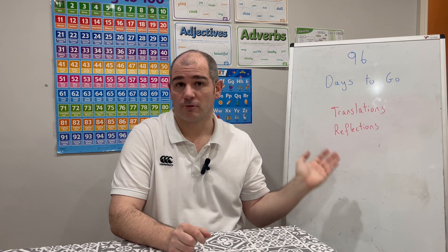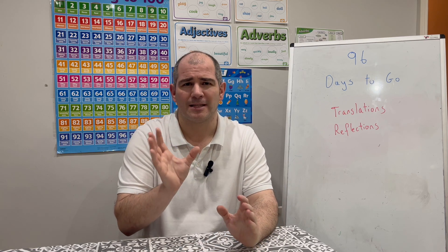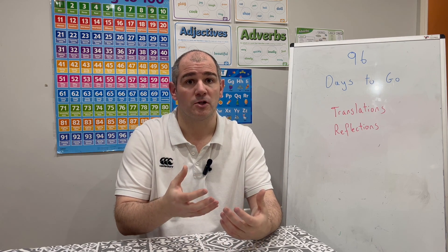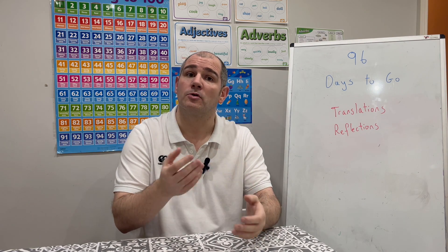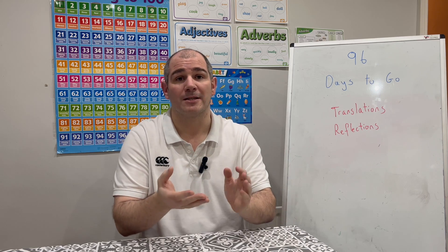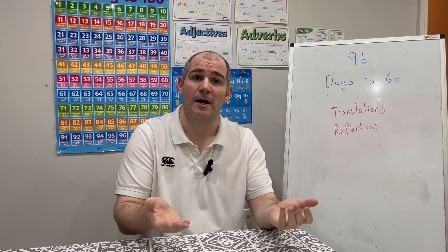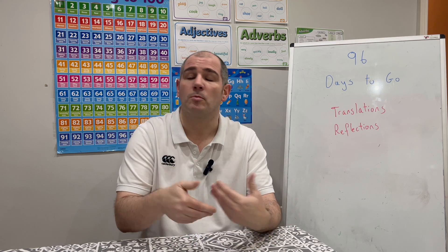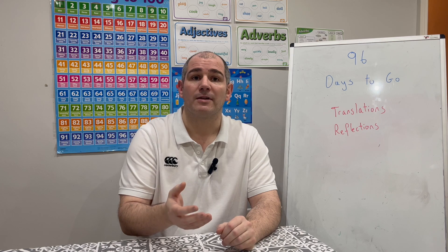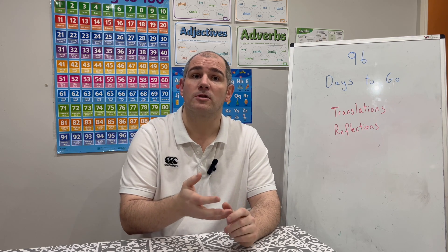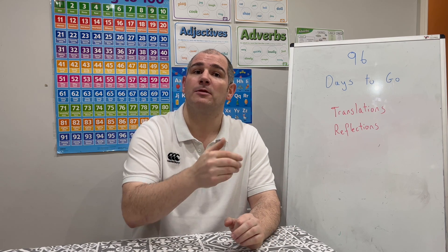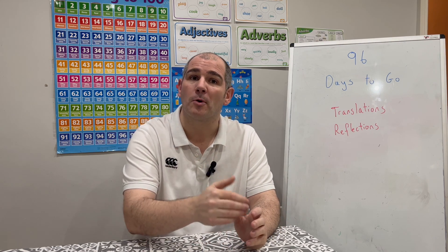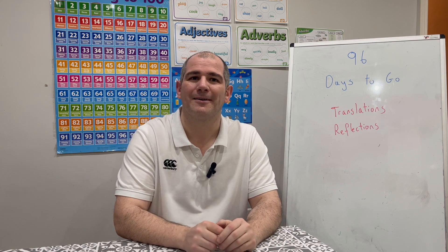Today's topics have been translations and reflections. Remember what translation vectors mean, how to reflect shapes in y = x and y = -x, and how to describe those transformations fully — stating whether it's a translation or reflection, giving the vector or mirror line equation. There's a link to practice questions in the description — the more practice you do the better. Keep doing your revision cards and if you're aiming for grade 8 or 9 do the higher plus cards too. There are 96 days to the GCSE Maths exam, so keep up the hard work. Thank you, cheers, bye.